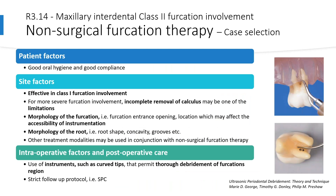With regards to non-surgical furcation therapy, as noted in the Honba study, this approach is more effective in class 1 furcation involvement. The benefit becomes limited in more severe furcation involvement given the likelihood of incomplete calculus removal. The effect of non-surgical therapy may also be affected by the morphology of the furcation — its entrance, opening, and location — affecting accessibility of instrumentation, as well as root morphology such as root shape, concavity, and grooves. The benefits of non-surgical furcation therapy may be reinforced when used in conjunction with other treatment modalities.